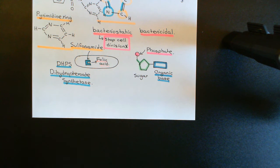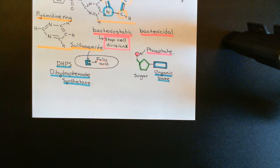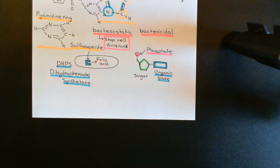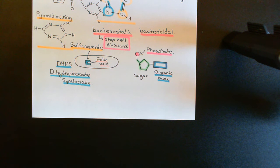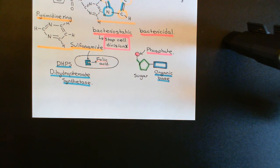By blocking this enzyme, you block the synthesis of folic acid, hence why sulfonamides are considered folate antagonist antibiotics, because they antagonize the folate pathway. Folic acid is so important because it's essential for the function of the enzymes which make RNA and DNA nucleotides. Without those nucleotides, you can't synthesize DNA and RNA, hence you can't make proteins and you can't replicate your genome, hence you can't divide. That's why the sulfonamides have a bacteriostatic effect.